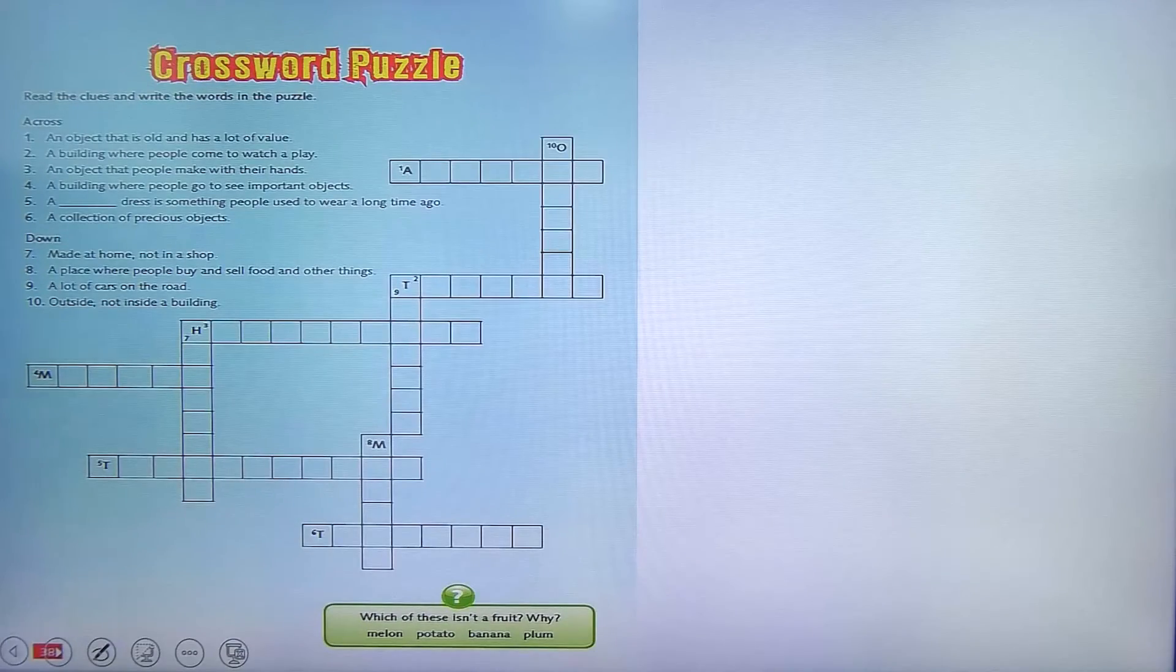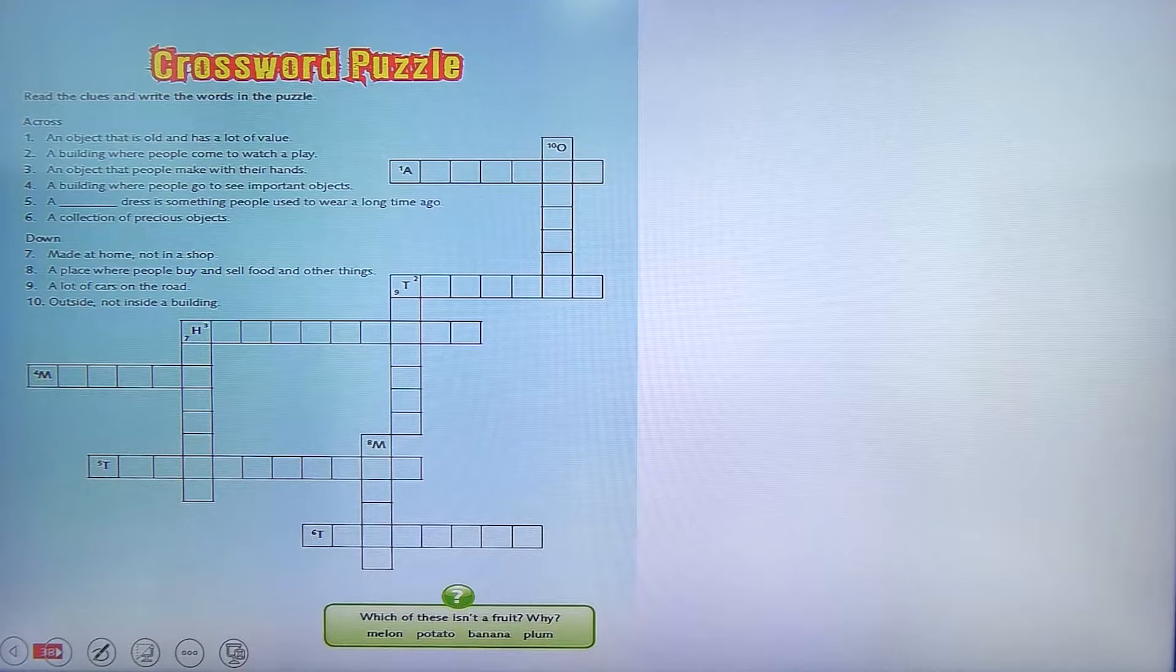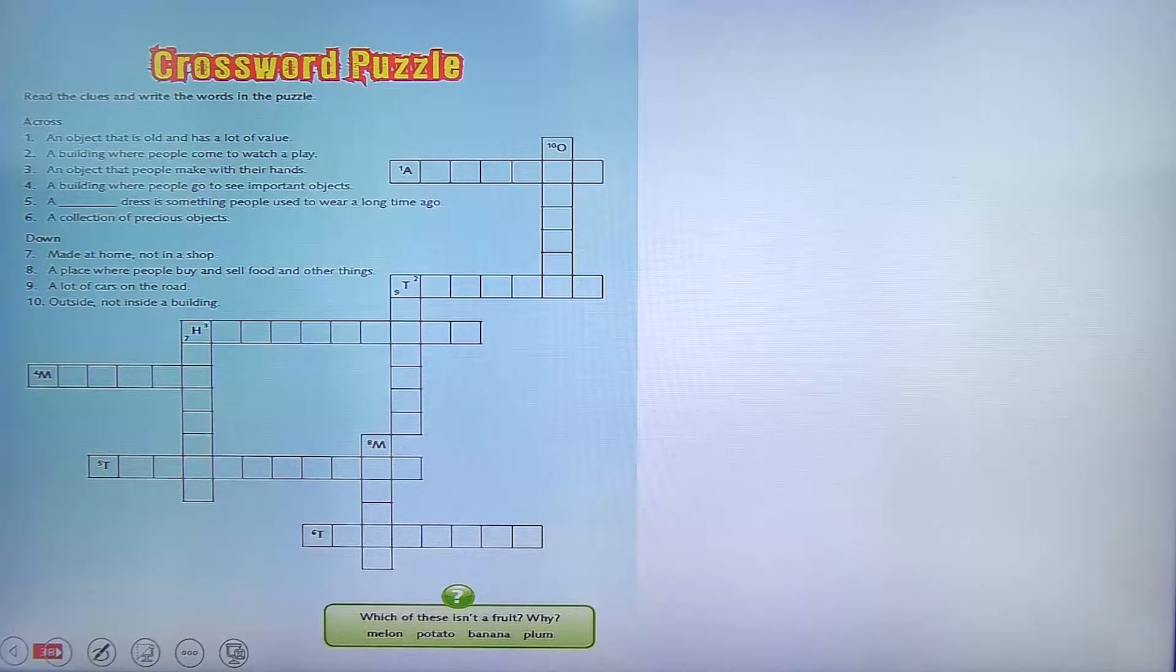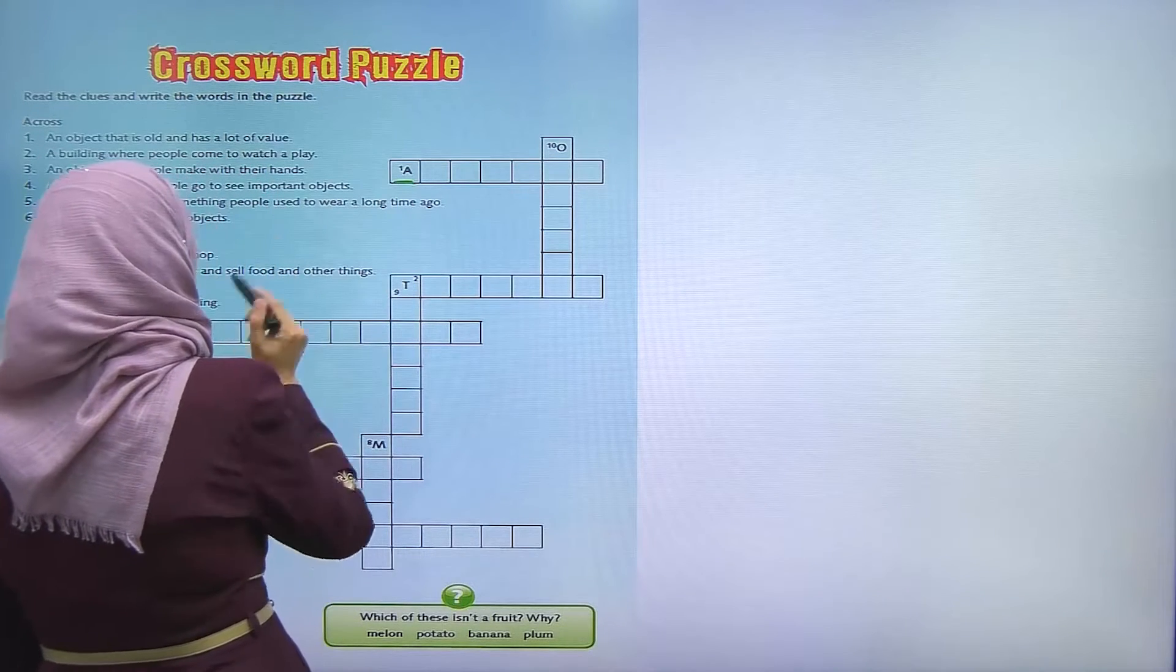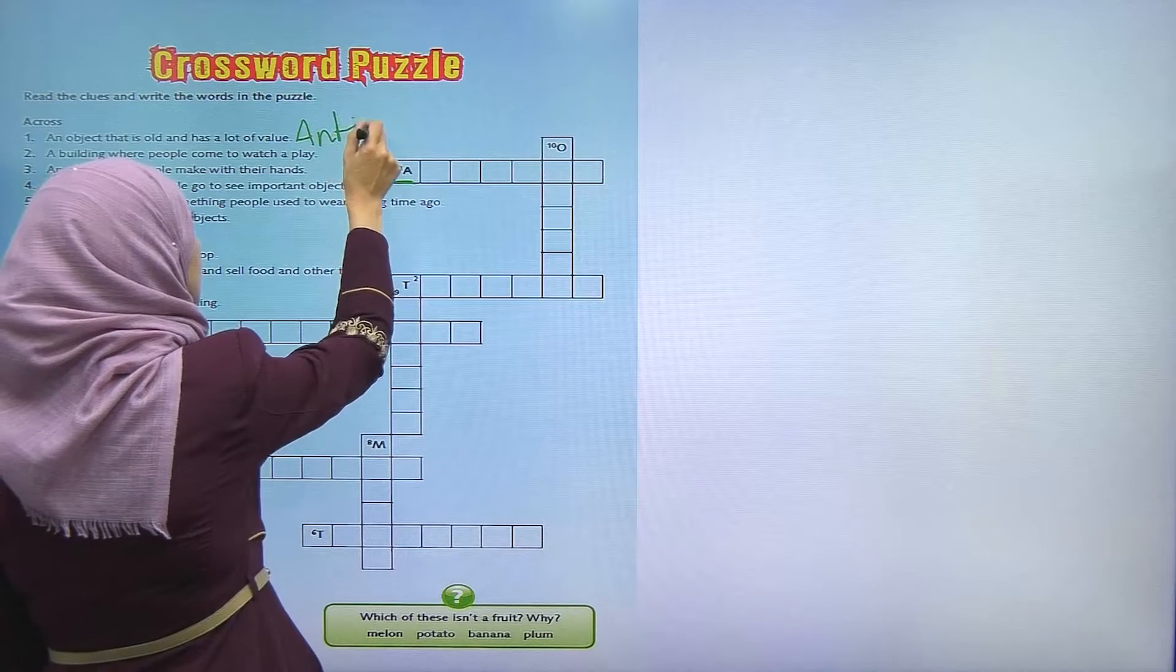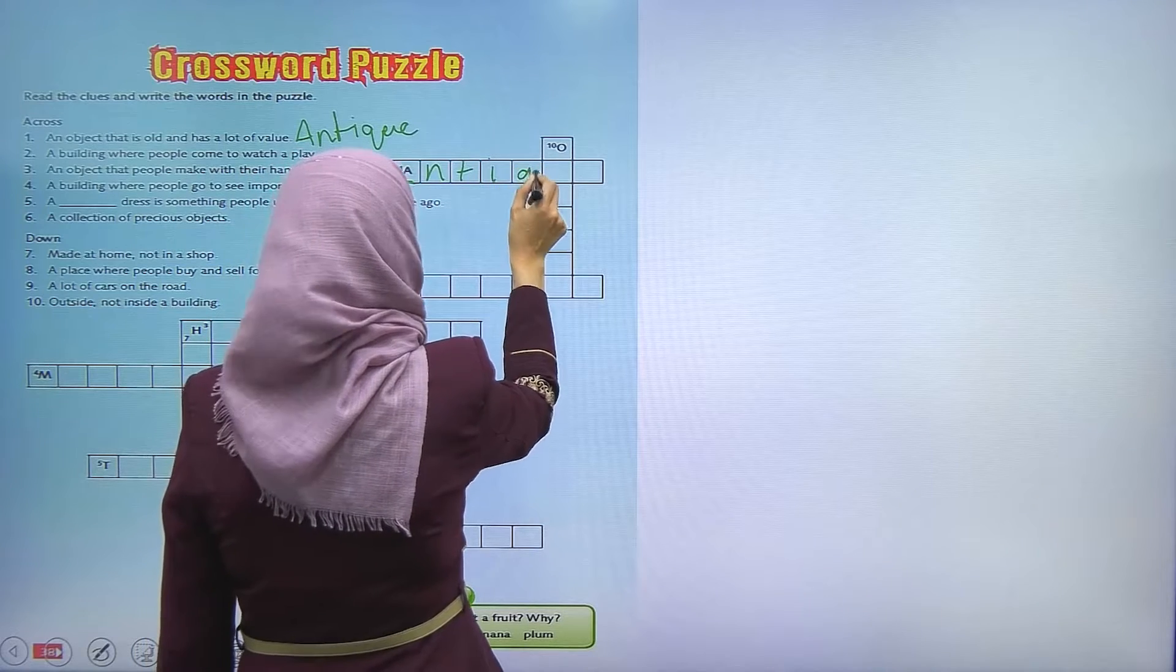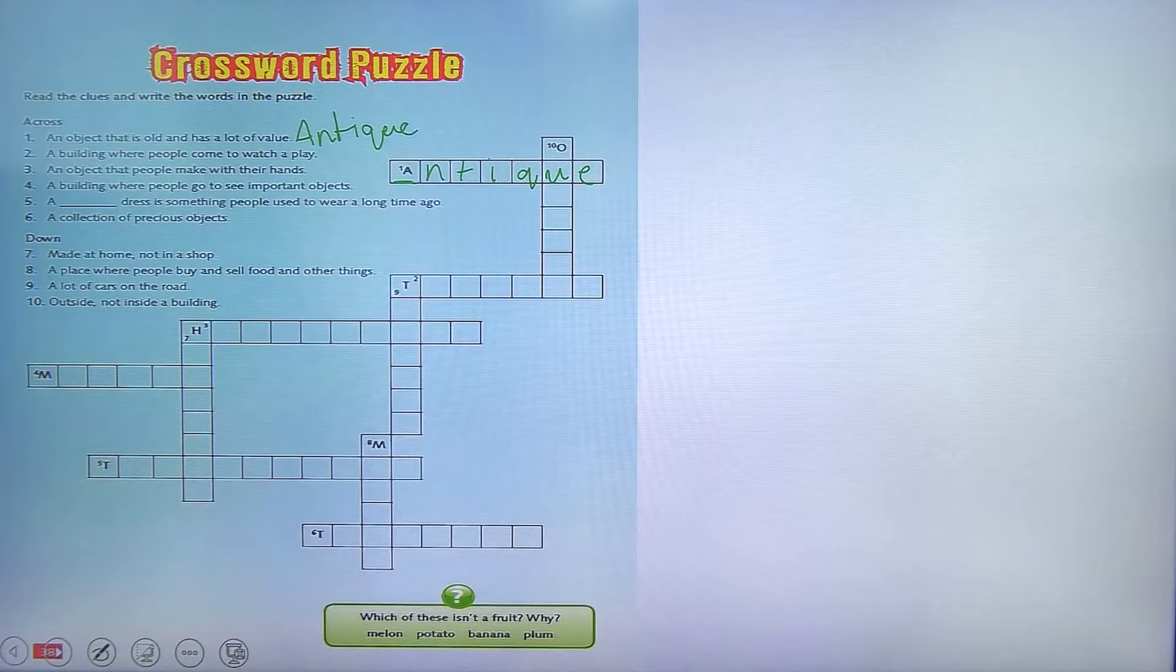Moving on to the crossword puzzle, read the clues and write the words in the puzzle. So across, an object that is old and has a lot of value. So what do you think it is? It starts with the A. So do you think that it is an antique?